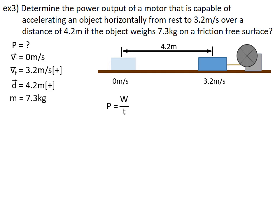Power is work divided by time. The object is not being lifted, so there is no work going into gravity. There is a friction free surface, so no work goes into friction. But the object is being accelerated. So power equals work going into acceleration divided by time.